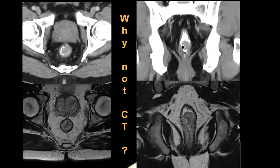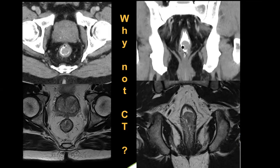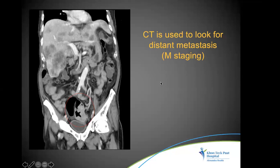CT scan lacks the soft tissue resolution to differentiate structures as well as MRI can. We can see a tumor on CT but cannot differentiate the muscular layer or sphincter involvement as well as on MRI. CT may be used if the patient cannot undergo MRI or has contraindications, or if there is a locally invasive tumor. The primary role of CT is distant staging — for example, detecting liver metastasis.